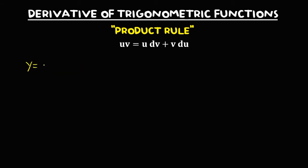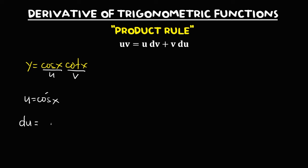For the next example, if we have y equals cosine x times cotangent x, this is u and this is v. So u equals cosine x, and the derivative of u — since the derivative of cosine is negative sine — is negative sine x. And v equals cotangent x, and the derivative of v — since the derivative of cotangent is negative cosecant squared — is negative cosecant squared x.